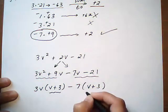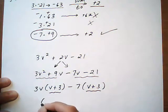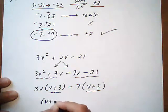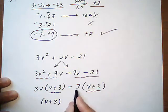Then we factor the common binomial, V plus 3. Left over 3V, take away 7.